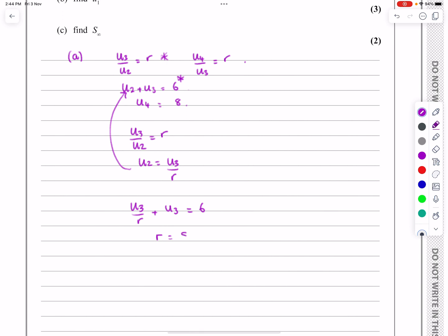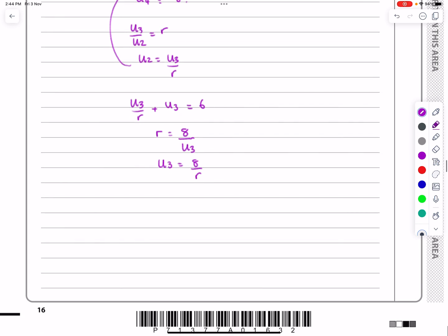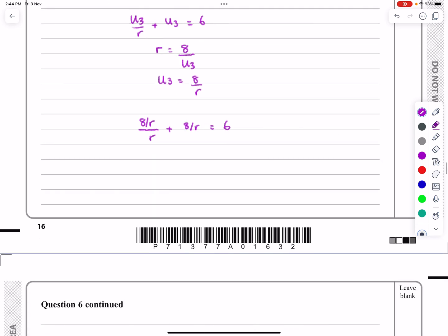So if U4 is equal to 8, R is equal to U4 over U3. And now I can rearrange that to get U3 is equal to U4 over R, and so I can substitute this now in and replace U3 and U3 in there. So what I'm actually going to get is 8 over R over R plus 8 over R is equal to 6.